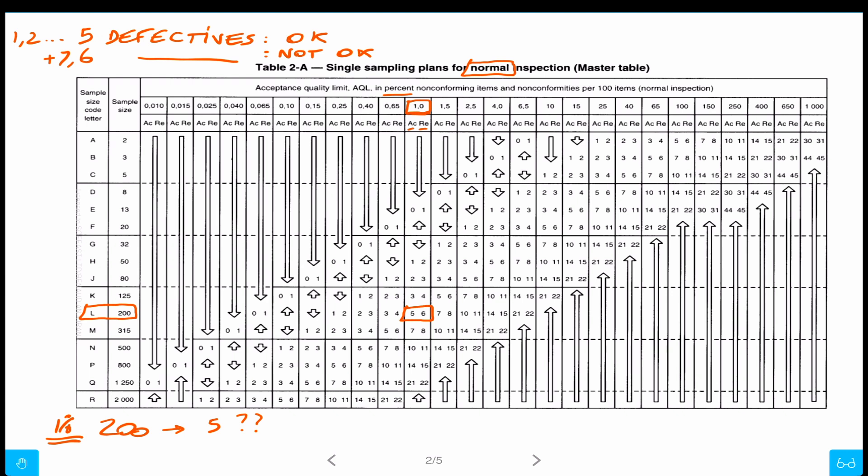This acceptance plan is built on the assumption that it's a continuing series of lots. It means that you have a production process with the same materials, same equipment and people, on the same process, same methods, etc., and you are shipping or receiving batches one by one. You're going to be able to apply this plan. This is what it was supposed to be used for.